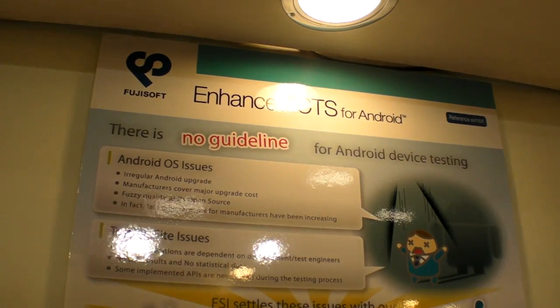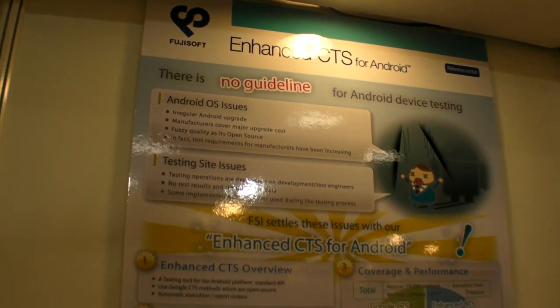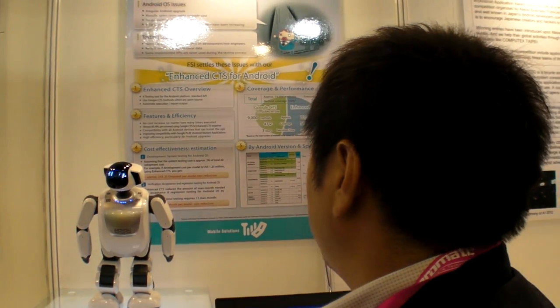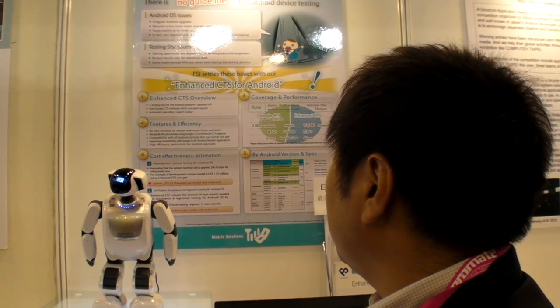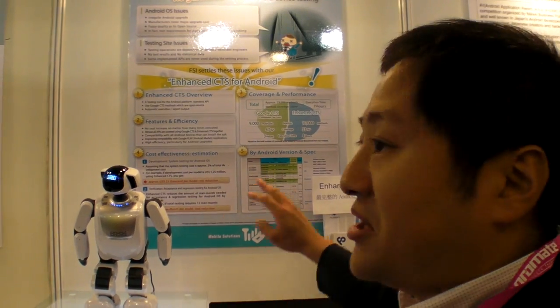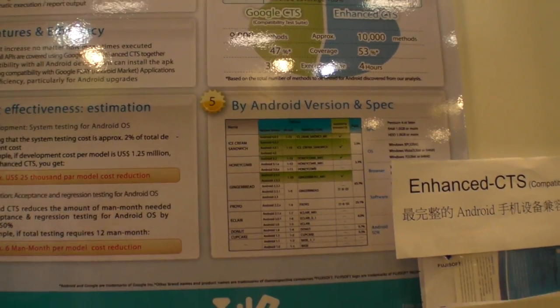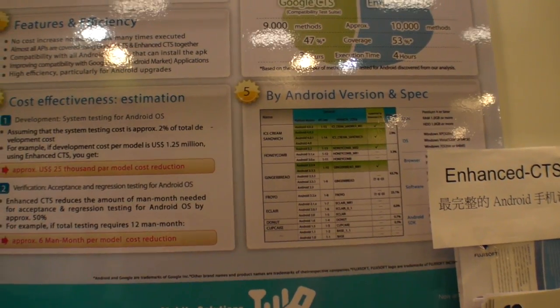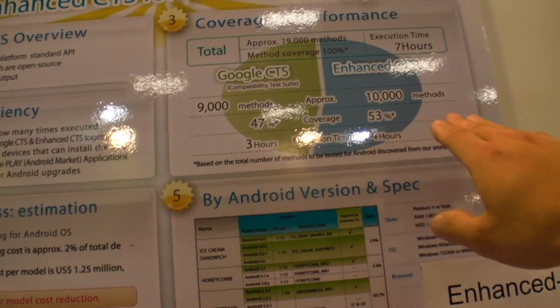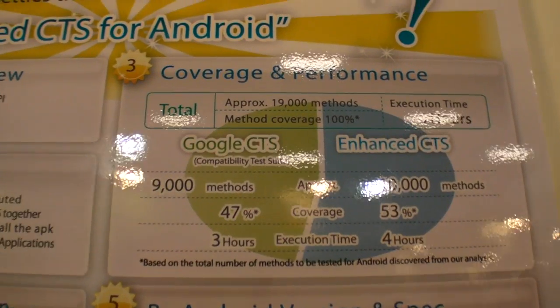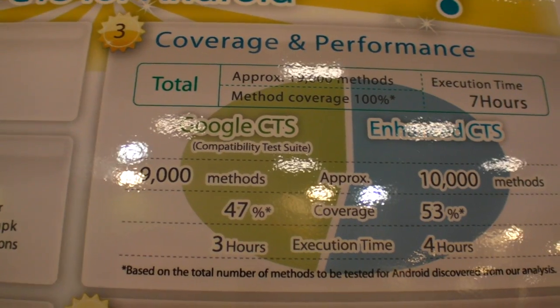Enhanced CTS is a test tool for Android. As you may know, Google CTS is not good enough to test the product — it only covers 9,000 test cases. But we have more than 10,000 cases for the Enhanced CTS test tool.